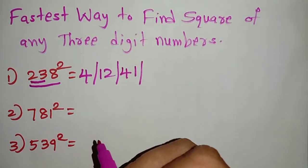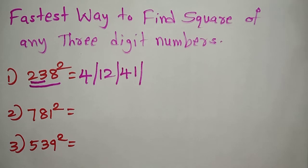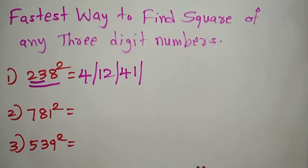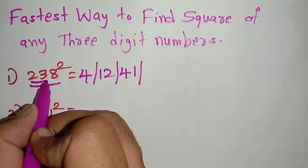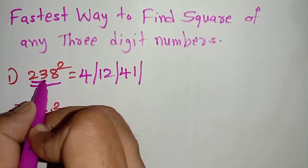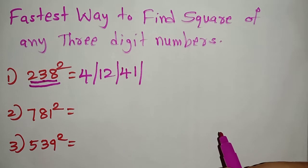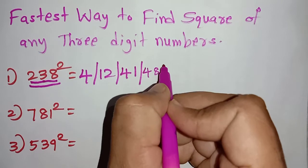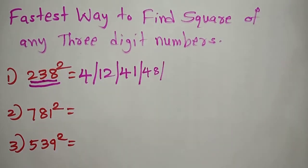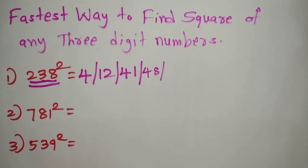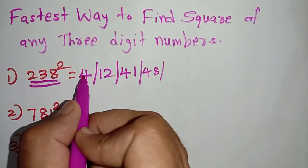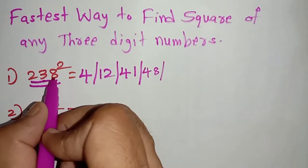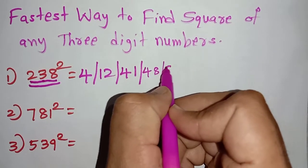The fourth part is we have to do the duplex of the last two digits. The last two digits are 3 and 8. 3 into 8 is 24, and 24 into 2 is 48. We write 48. And the last step is we have to do the square of the last digit. The last digit is 8, and 8 squared is equal to 64.